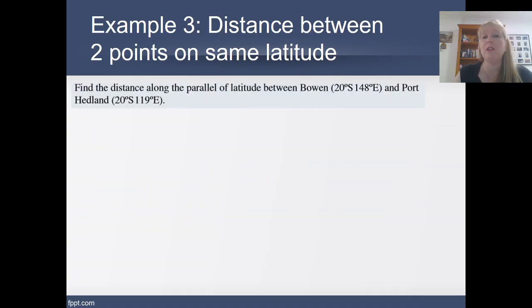So let's do an example between Bowen, which is in Queensland, and Port Headland, which is in Western Australia. Notice that we've got the same latitude here, 20 degrees south. They're both south of the equator, but they've both got different longitudes this time. So here's my rule. One degree of latitude is equal to 111.2 cos theta kilometres.